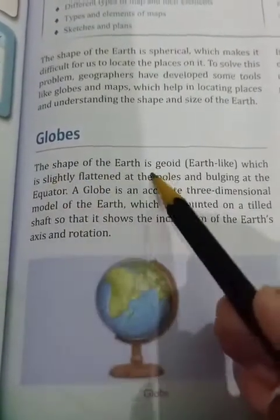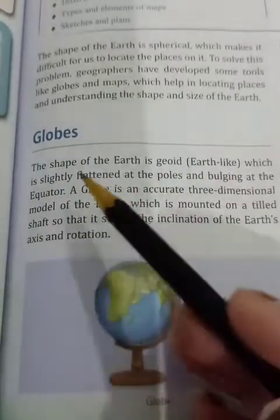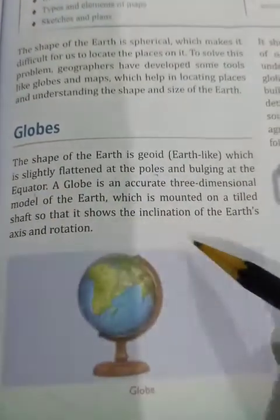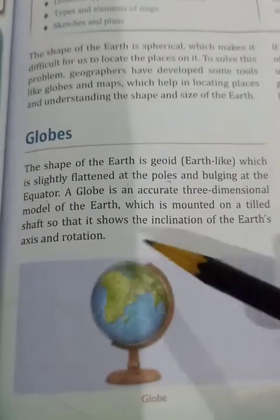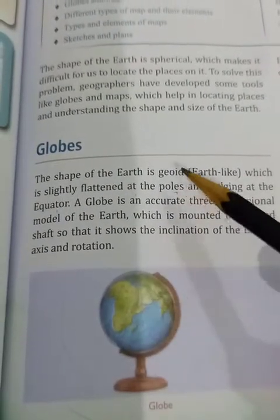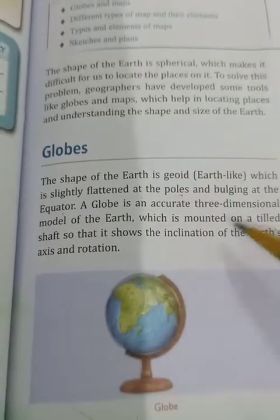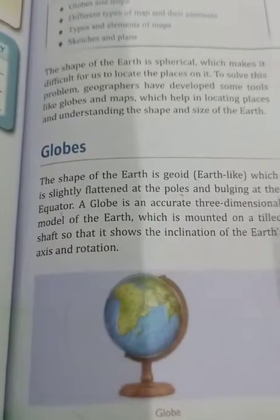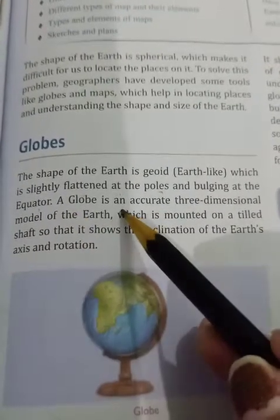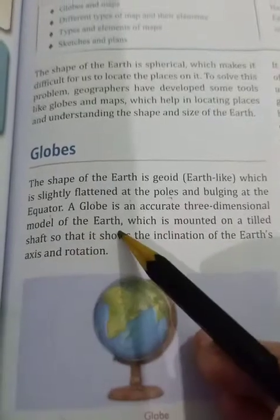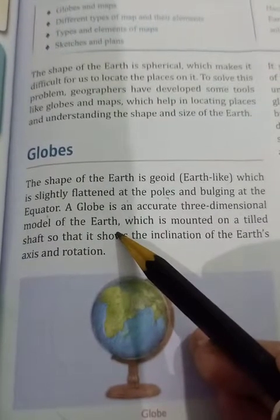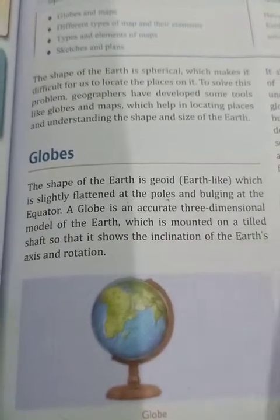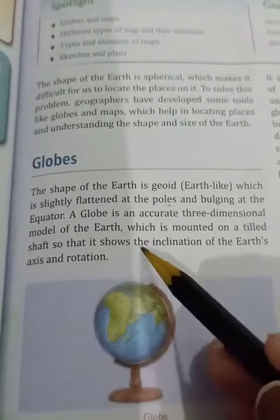The shape of the earth is geoid, which is slightly flattened at the poles and bulging at the equator. The globe is in a geoid shape, meaning flattened at the poles and bulging at the equator's side.